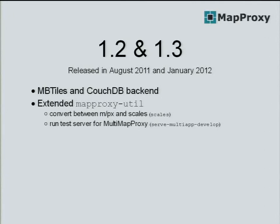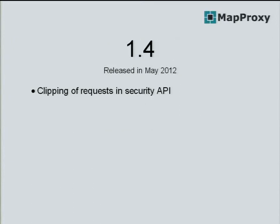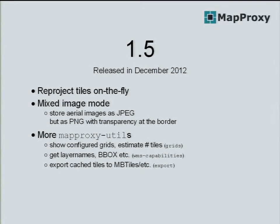With the next releases, we added new cache backends. Before that, MapProxy always stored tiles on the file system as simple files — we then added MBTiles and CouchDB backends. We added more utils, for example the scales tool that lets you convert between scales and resolutions, which is quite handy when working with MapProxy configuration. With version 1.4, one of the larger features was the clipping of requests in the security API.